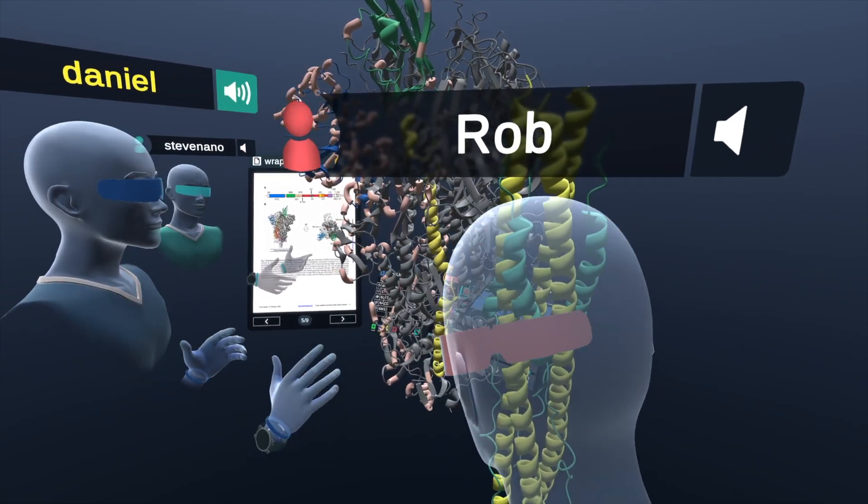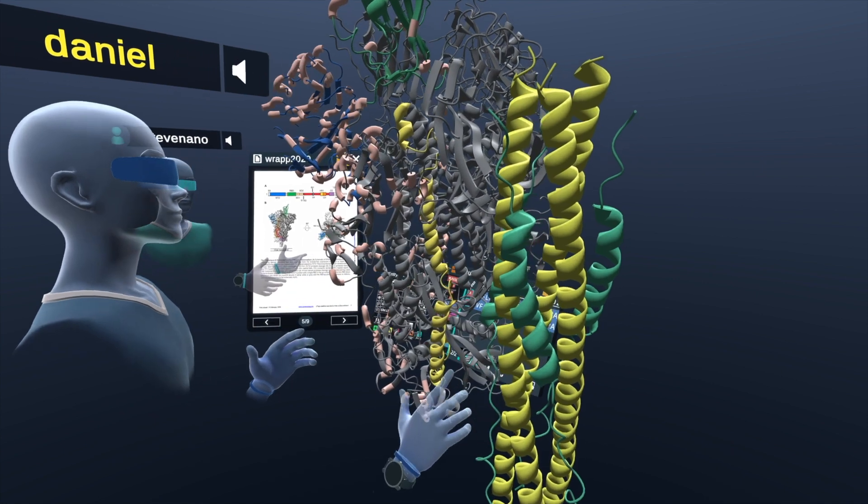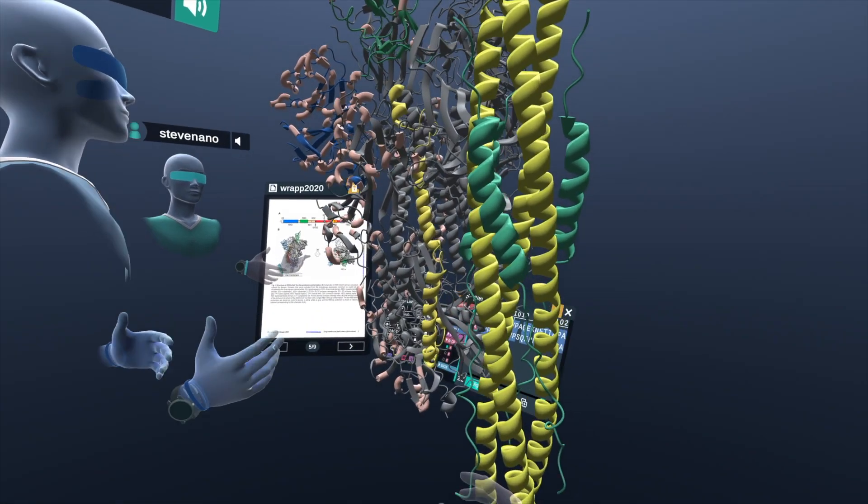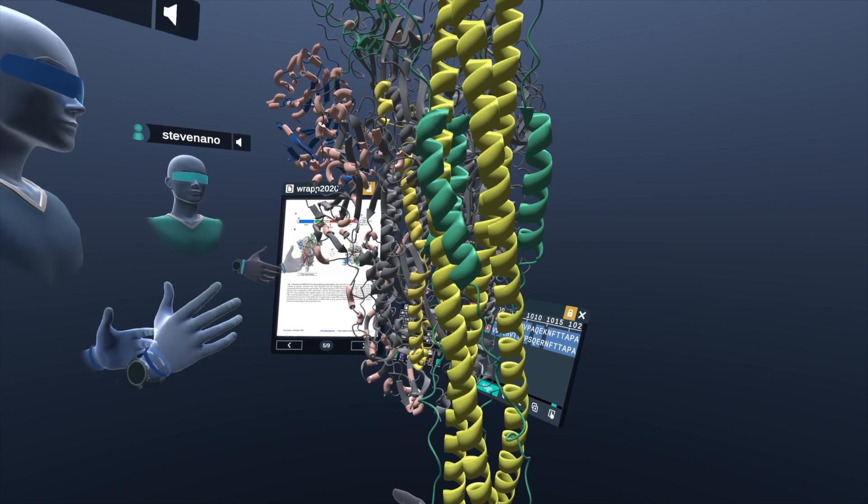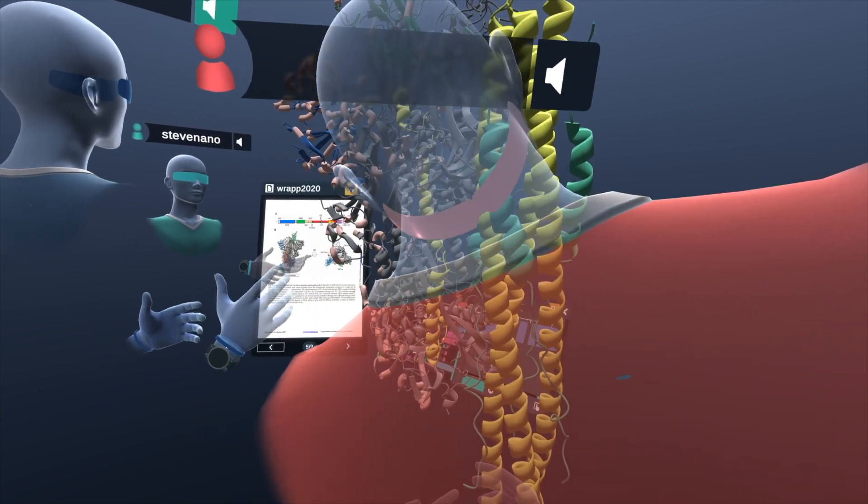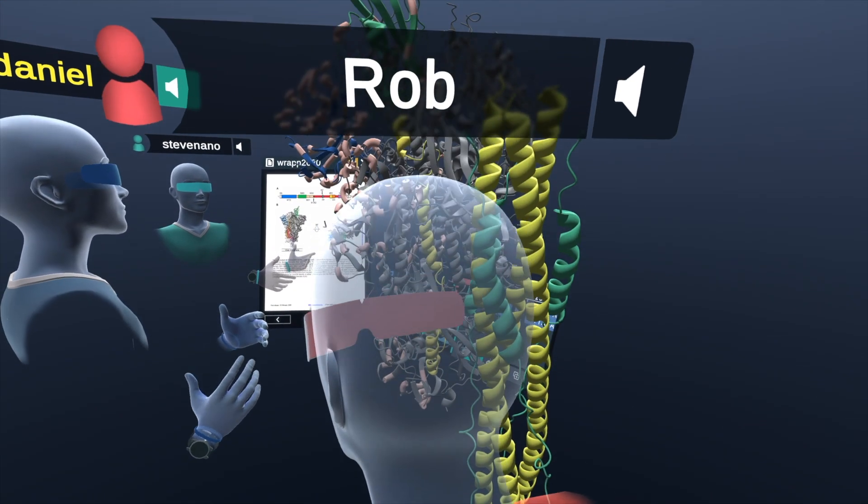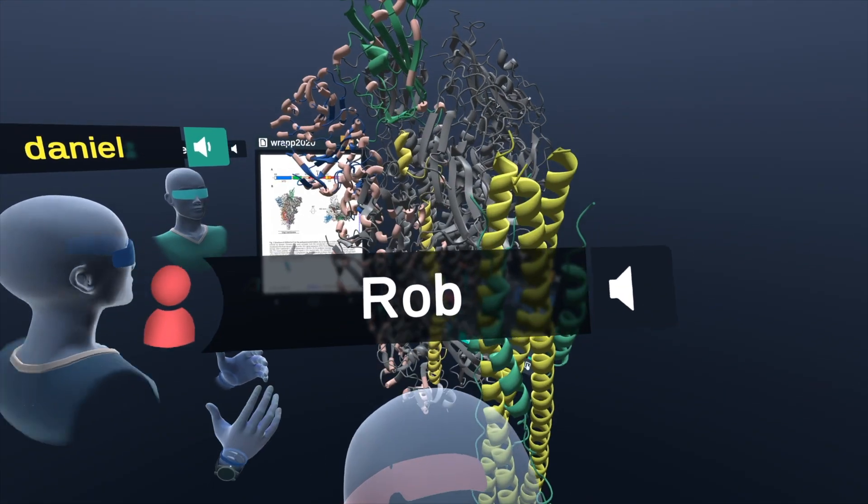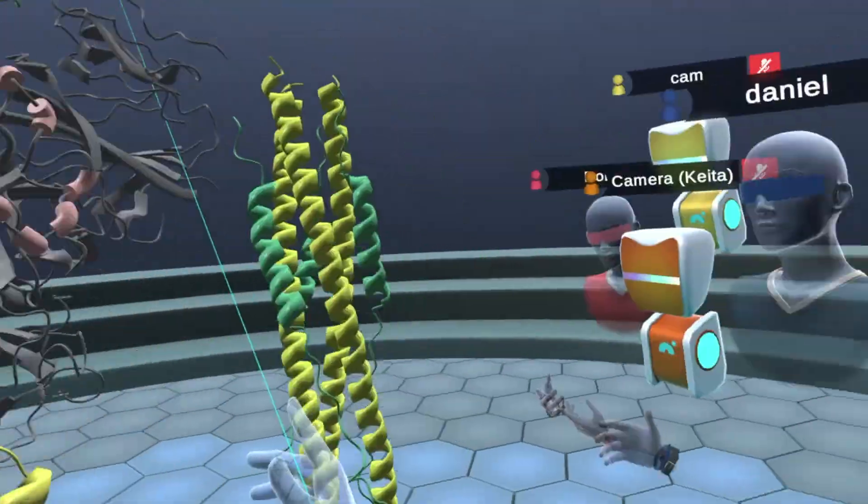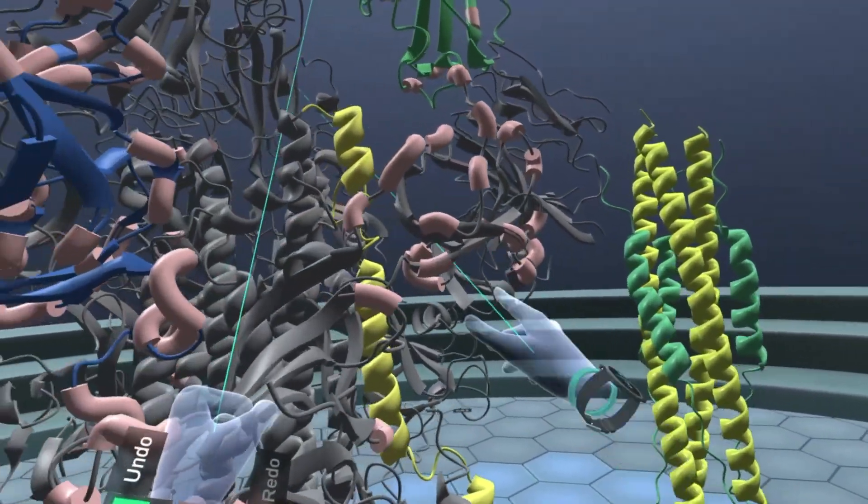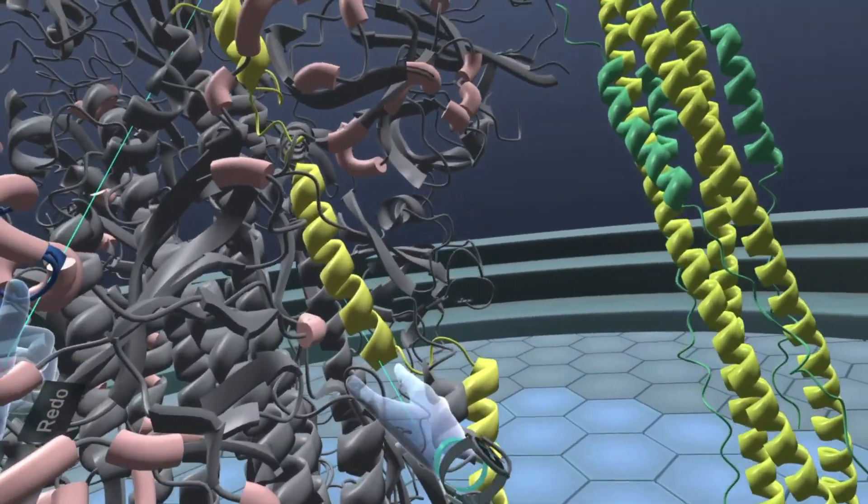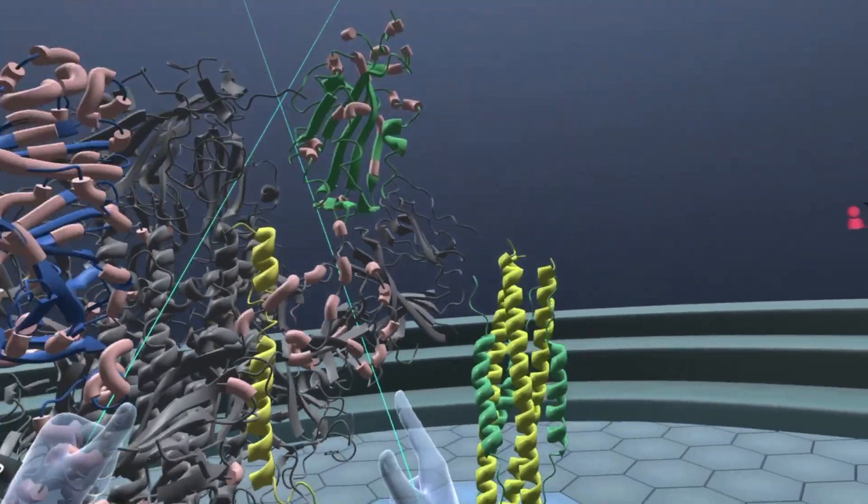That just binds to the groups here. And this whole complex is called the six helix bundle. So this is what actually targets the human membrane so that it allows for the virus to fuse its viral membrane to the human membrane.